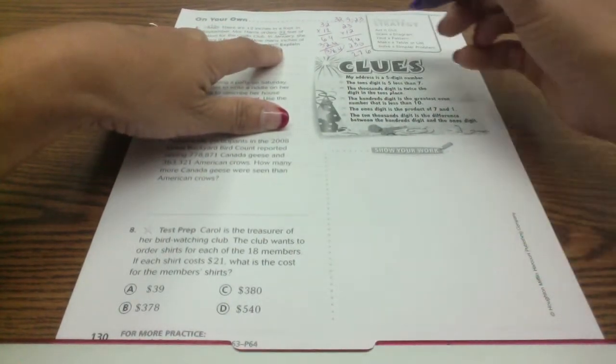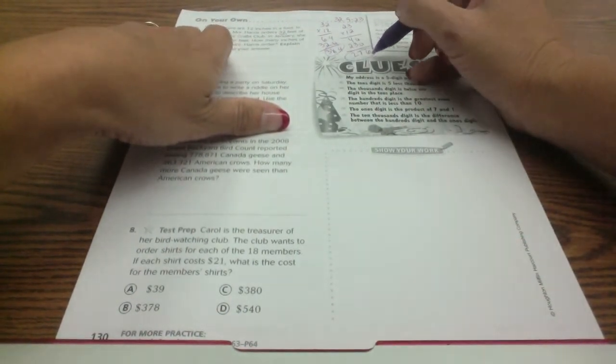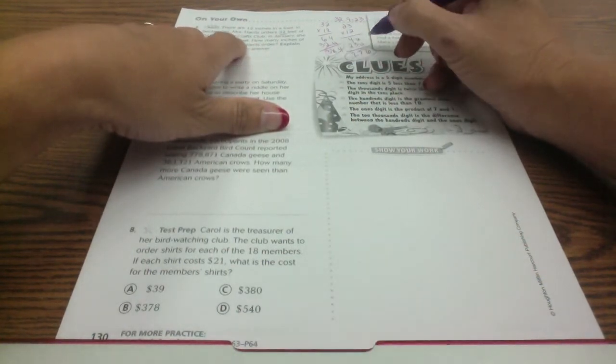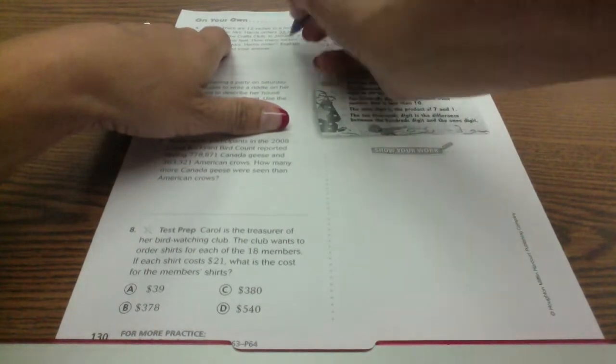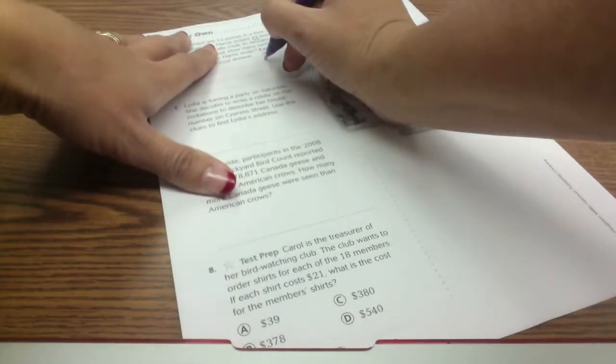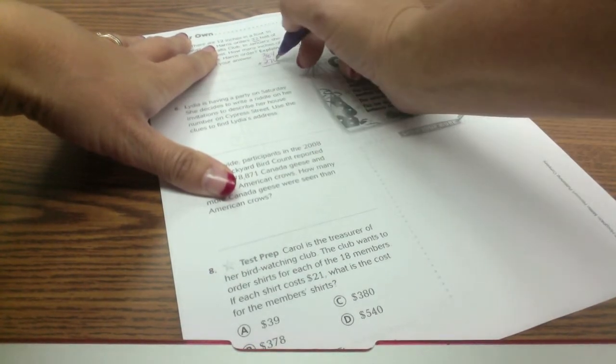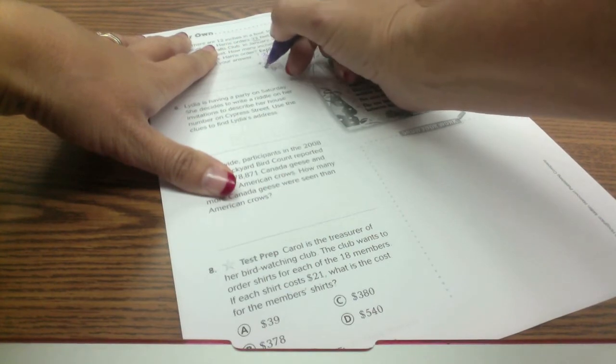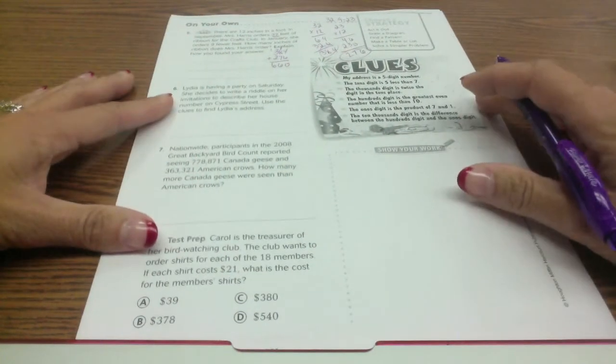So now this is how much she ordered in September, in January. This is how much she ordered in September. To find out the total I'm just going to add those two. 384 and 276, because we're looking for the total. And our total is 660.